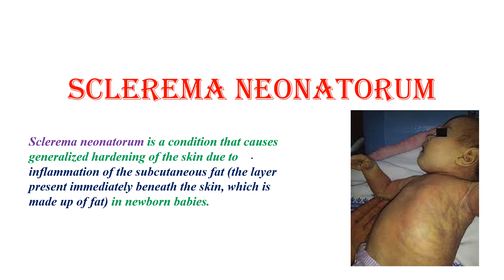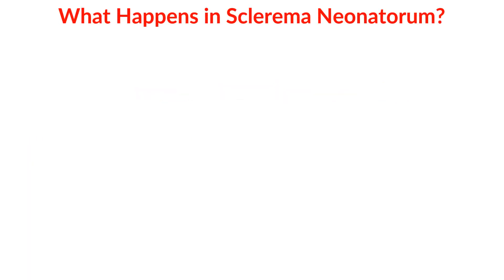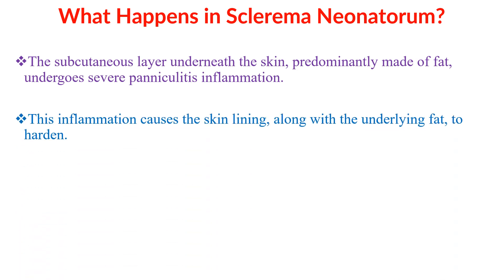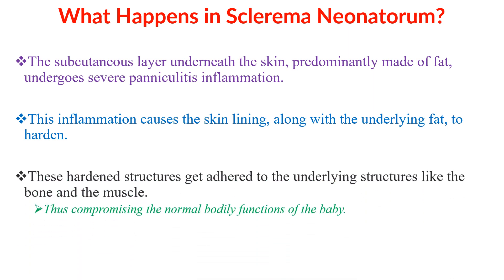The subcutaneous fat is the layer present immediately beneath the skin, which is made up of fat. This occurs in newborn babies. In sclerema neonatorum, the subcutaneous layer underneath the skin, predominantly made of fat, undergoes severe panniculitis inflammation. This inflammation causes the skin lining along with the underlying fat to harden, and these hardened structures get adhered to the underlying structures like the bone and the muscle, thus compromising the normal bodily function of the baby.